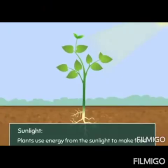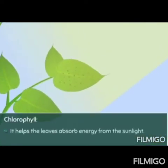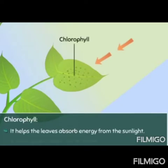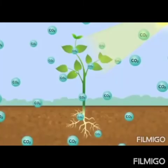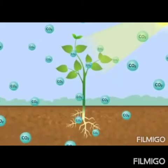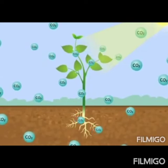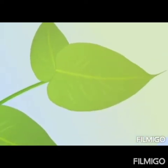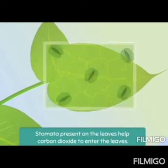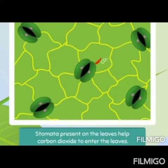Plants use energy from sunlight to make food. The part of the leaves that catches and absorbs the sun's energy is called chlorophyll. Remember, it is chlorophyll that gives leaves their green colour. Plants obtain carbon dioxide gas from the air. Tiny holes called stomata, present on the leaves, help carbon dioxide to enter the leaves.